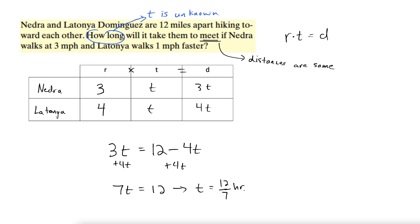So that's a weird way. Like how long did it take you, Nedra, to meet up with Latanya? Oh, 12 sevenths hours. No one talks that way. So let's convert this to a mixed number here. So I'm going to take 7 into 12. So it goes in once. 1 times 7 is 7. Subtract. We get 5. So 1 and 5 sevenths hours. That's a little better. Both would be mathematically correct.